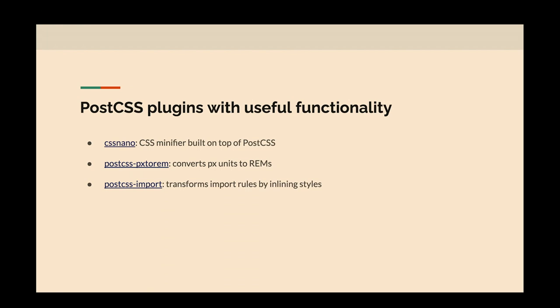There are some PostCSS plugins with useful utility functionality. CSS Nano minifies your CSS via a PostCSS plugin. PostCSS PX to REM converts all your pixel definitions to REMs — so if you like writing sizes in pixels, it will convert everything to REM after compilation so you don't have to do the REM math yourself. And postcss-import transforms import rules by inlining styles — similar to Sass partials — which I'll show an example of.